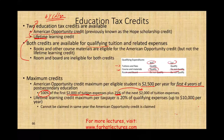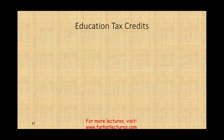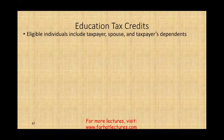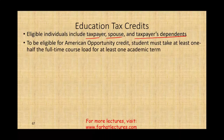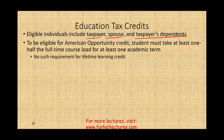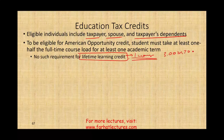You cannot claim the American Opportunity Credit and the Lifetime Learning Credit for the same individual in the same year. Education tax credits are available for the taxpayer, their spouse, and the taxpayer's dependent. To be eligible for the American Opportunity Credit, the student must be taking at least a half-time course load for at least one academic term. There is no such enrollment requirement for the Lifetime Learning Credit — you can take just one course.